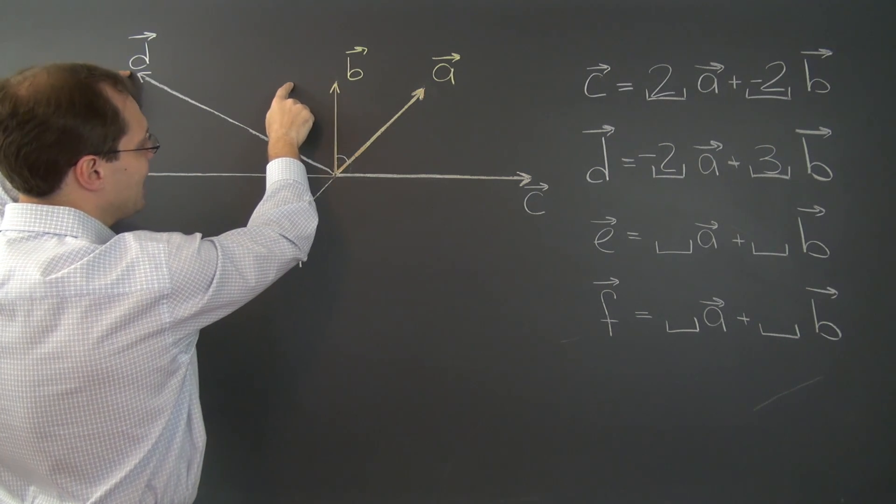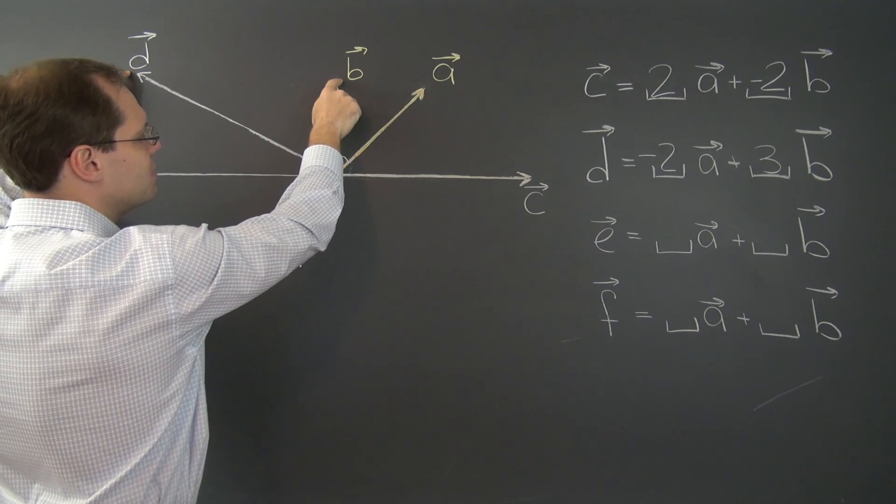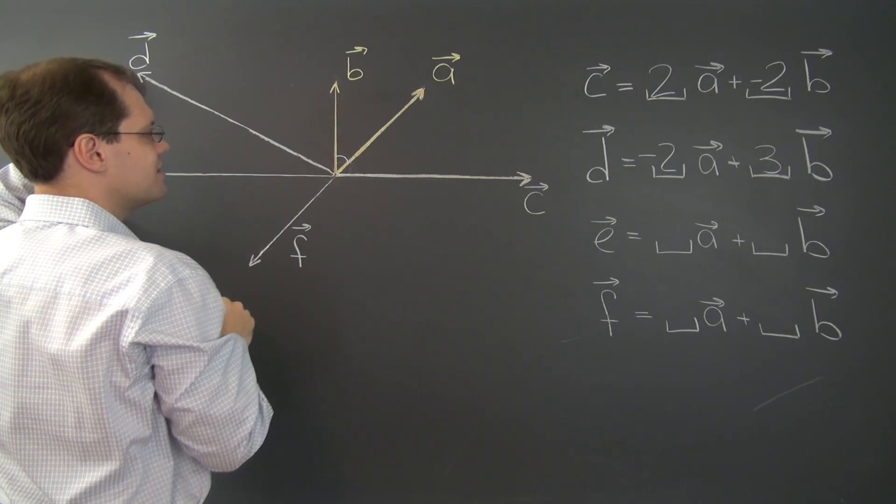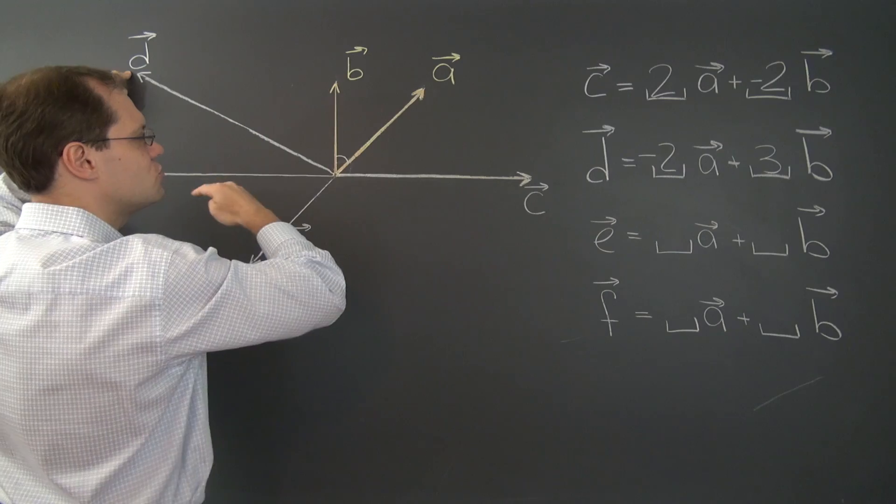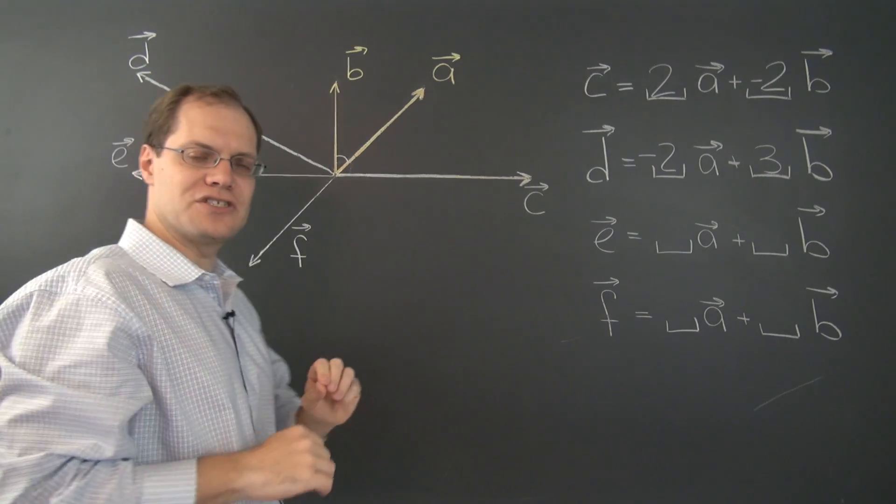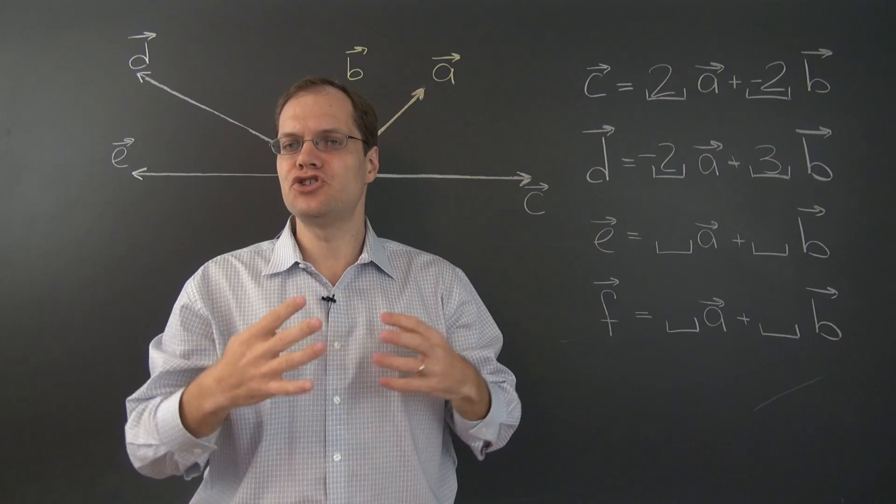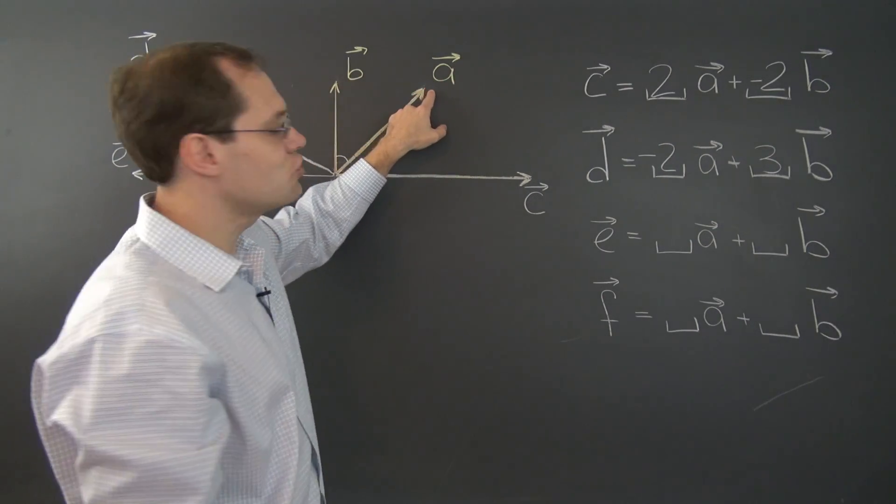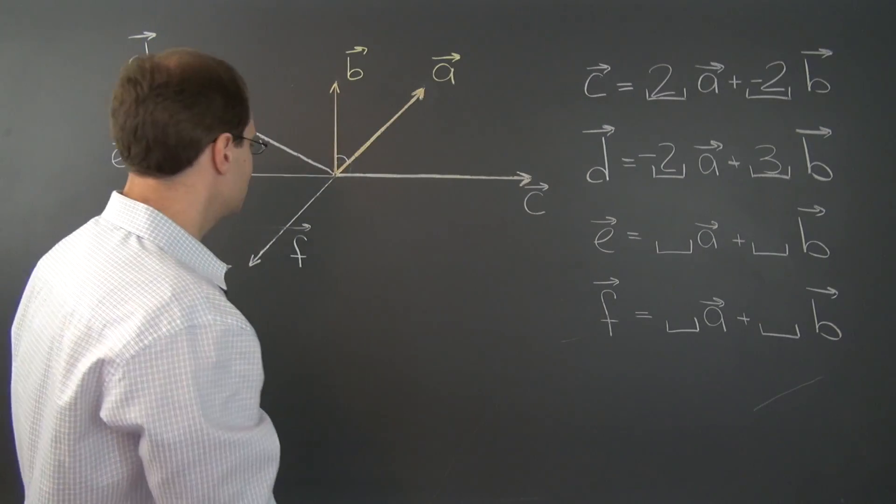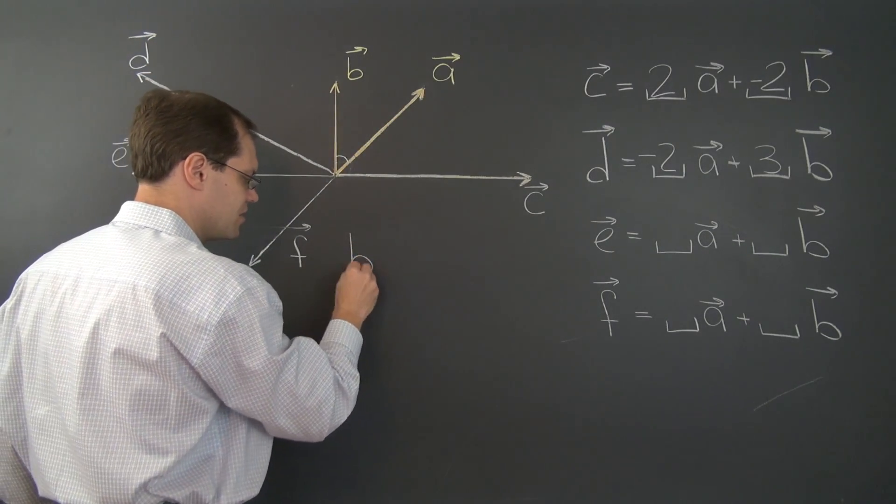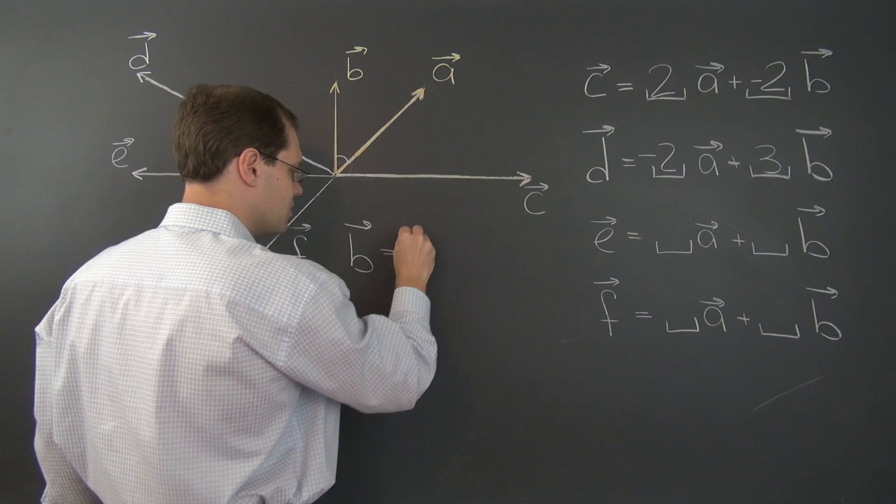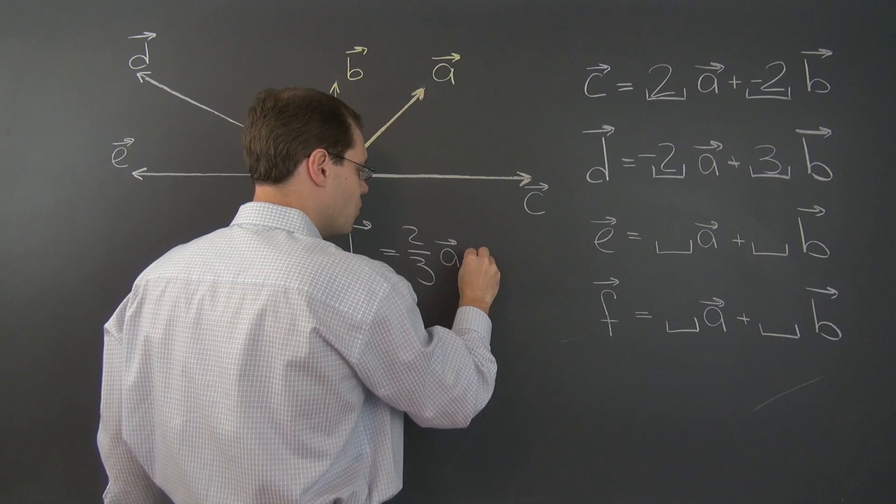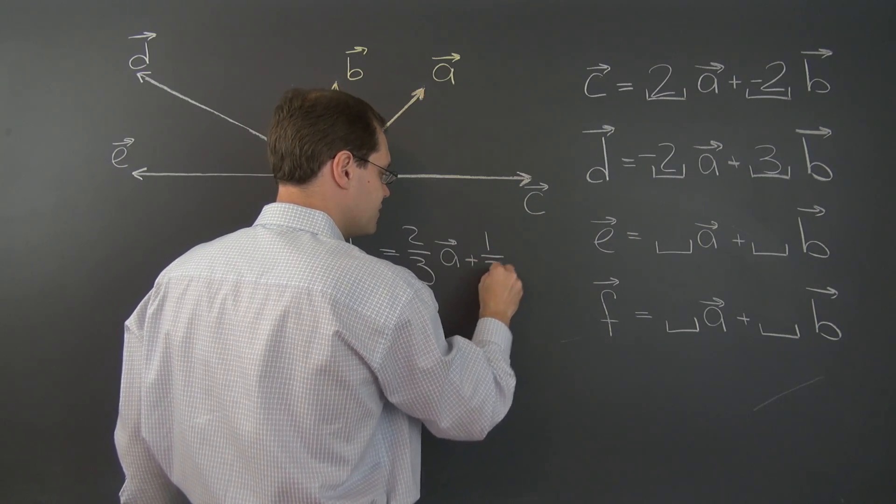So had it been here, it would be half of a and half of d. But being here twice as close to a as it is to d, it has to be in proportion one to two. And the coefficients have to add up to one. So it's got to be two thirds and one third. And it's two thirds of a and one third of d. So let's write it down: b equals two thirds of a and one third of d.